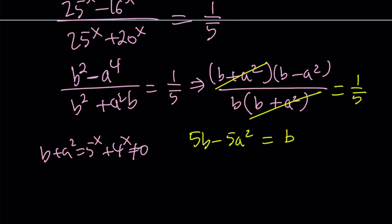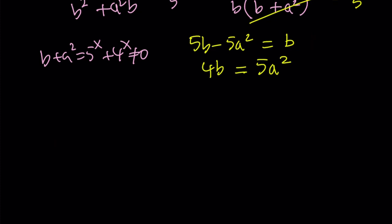And from here, we get 4b equals 5a squared. I probably should have picked u as a variable instead of b, so I could say 4u. Anyways, you get the idea. So we get 4b equals 5a squared.